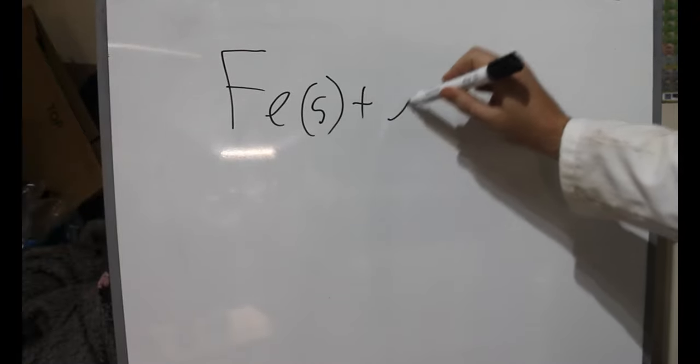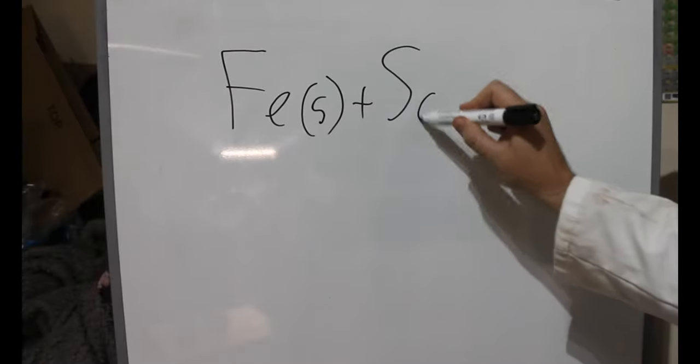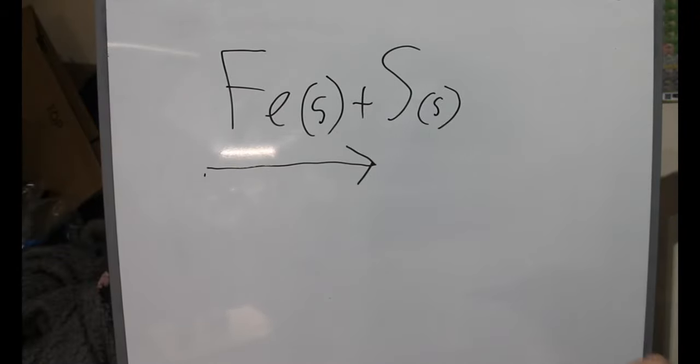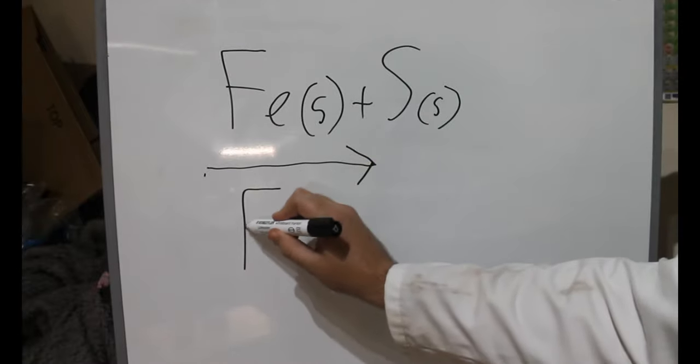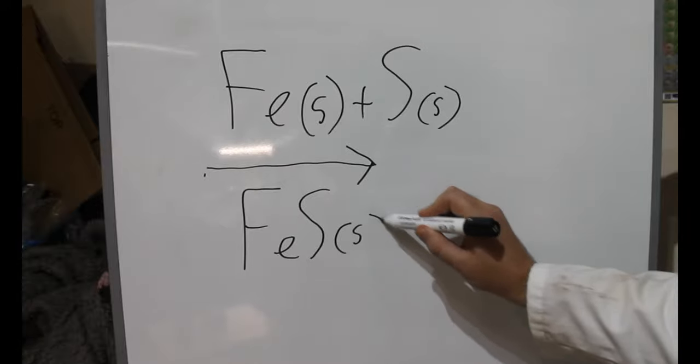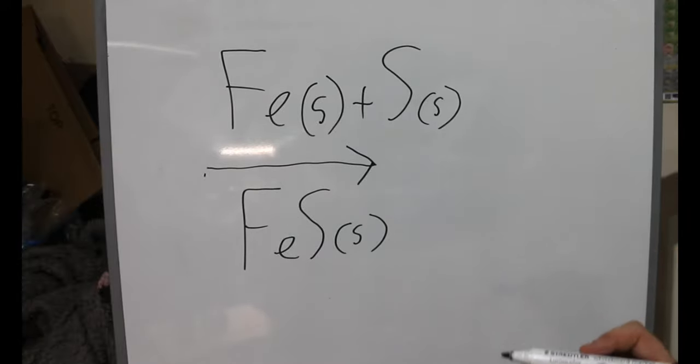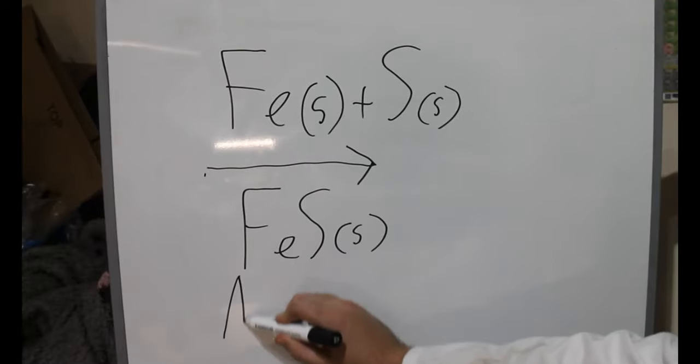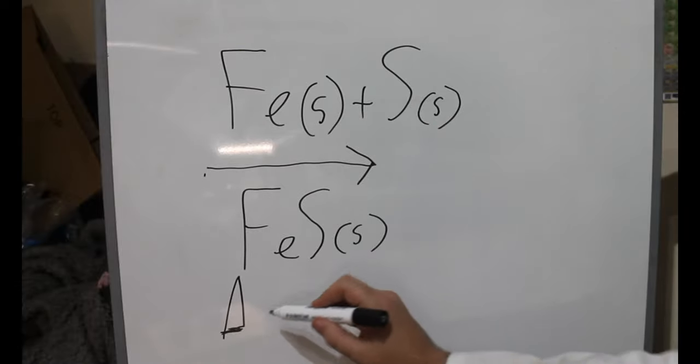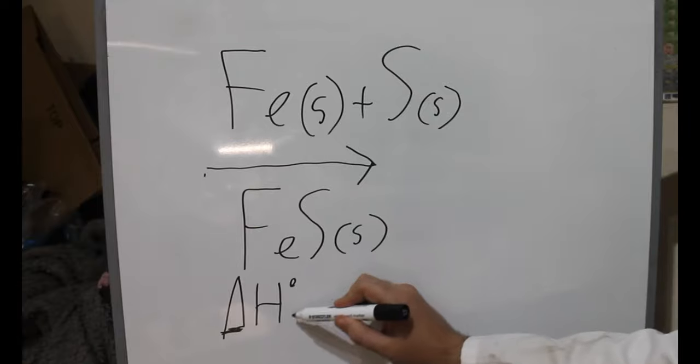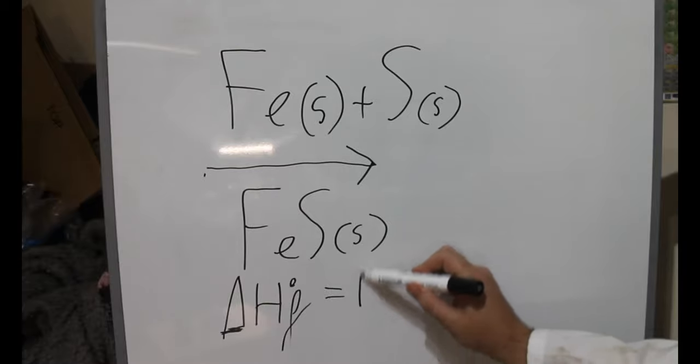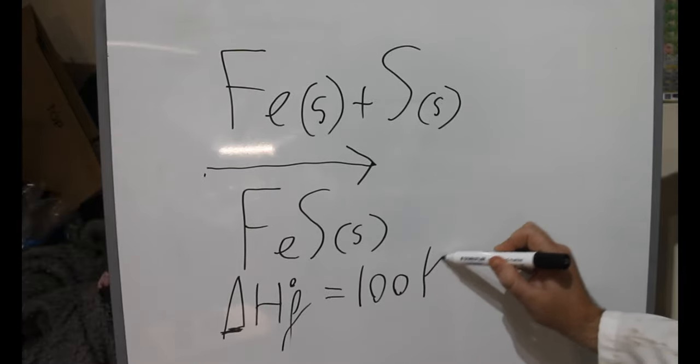The mole ratio of iron to sulfur is approximately one, which gives us a relatively simple equation: iron in its solid state plus sulfur in its solid state being converted into an iron sulfur compound, once again in a solid state, as we saw during the demonstration. The standard heat of formation is approximately 100 kilojoules per mole.